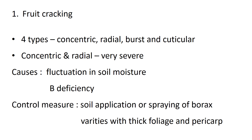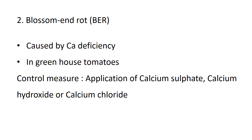Among these four types, concentric and radial are very severe. Causes include fluctuation in soil moisture such as high rainfall, long dry spell, high day temperature followed by low temperature, and boron deficiency. Control measures include soil application or spraying of borax and use of varieties with thick foliage and pericarp of fruit.